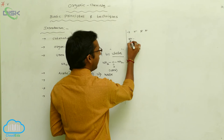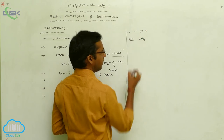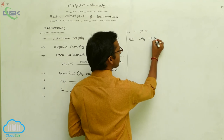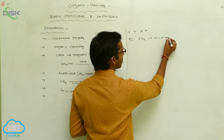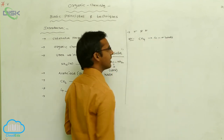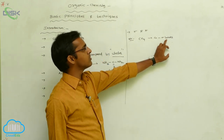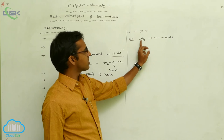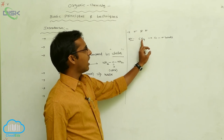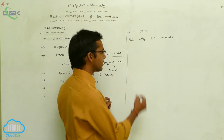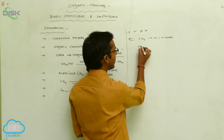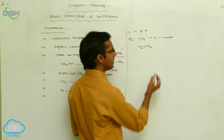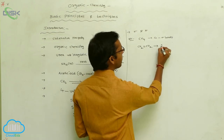For example, in methane, four sigma bonds are present. Generally, all alkanes form only sigma bonds — the suffix '-ane' indicates alkane. Alkenes, such as ethene (CH₂=CH₂), contain one pi bond in addition to sigma bonds.